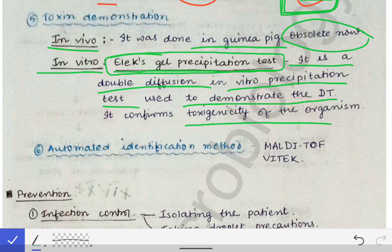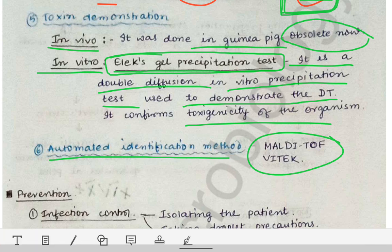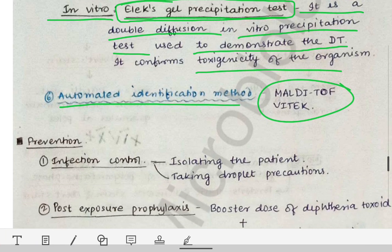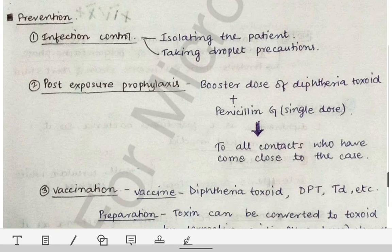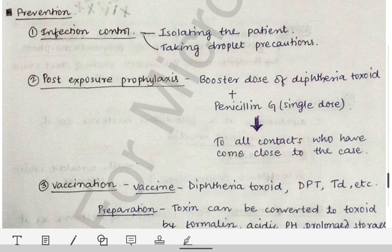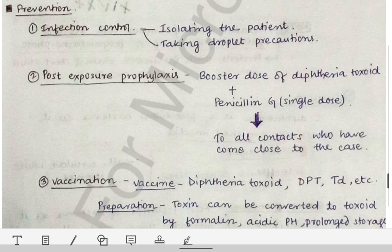Automated identification methods such as MALDI-TOF and Vitek can also be used to detect and diagnose Corynebacterium diphtheriae. Now moving to the prevention of Corynebacterium diphtheriae and faucial diphtheria.